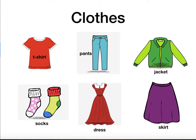What color is the jacket? If you said green, you are correct — the jacket is green. What color is the t-shirt? The t-shirt is red. The dress is also red. What color are the pants? The pants are blue.